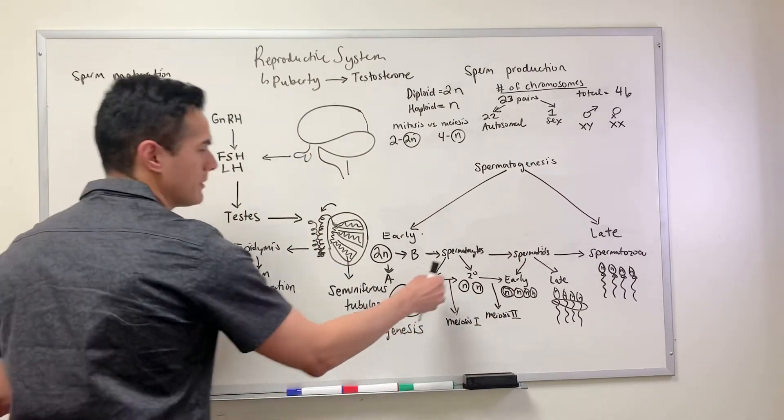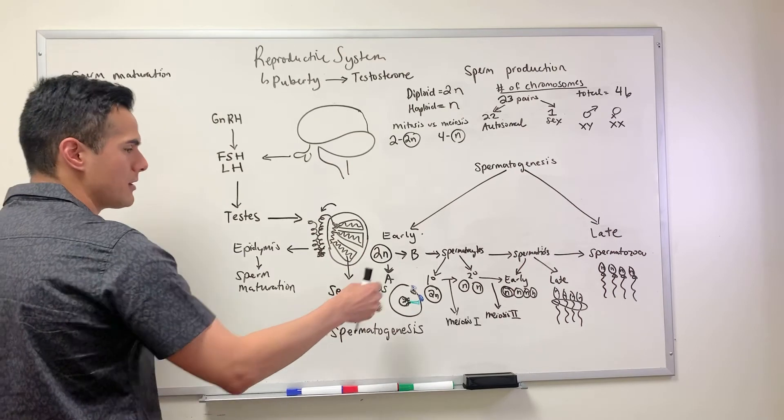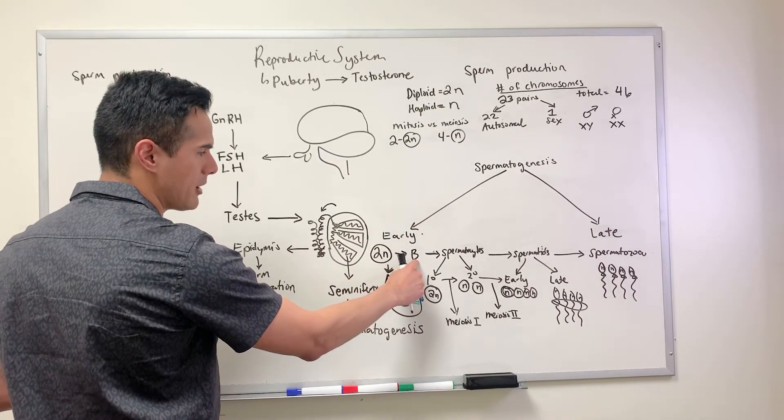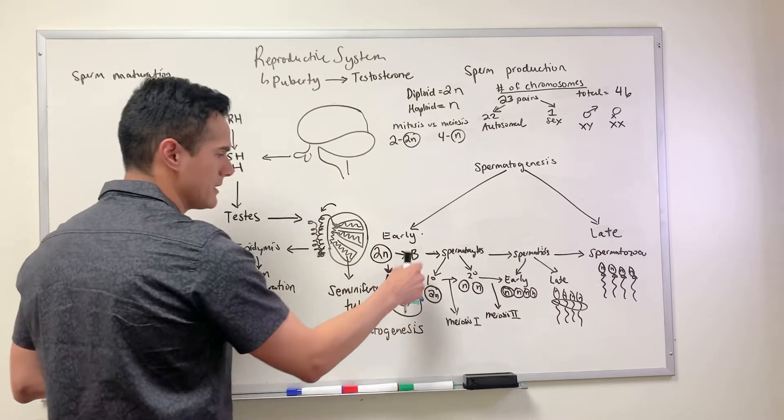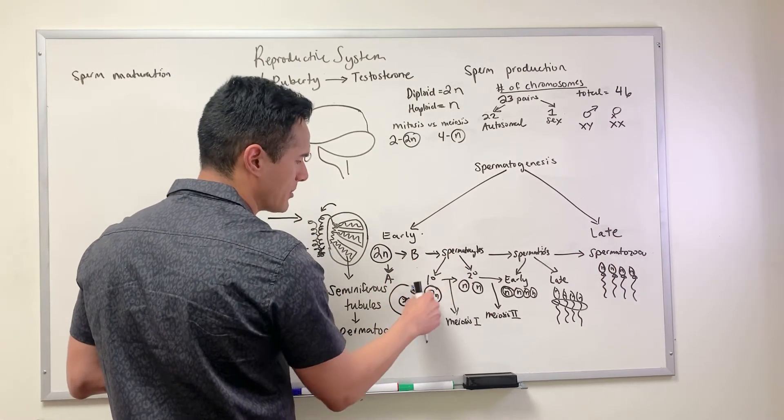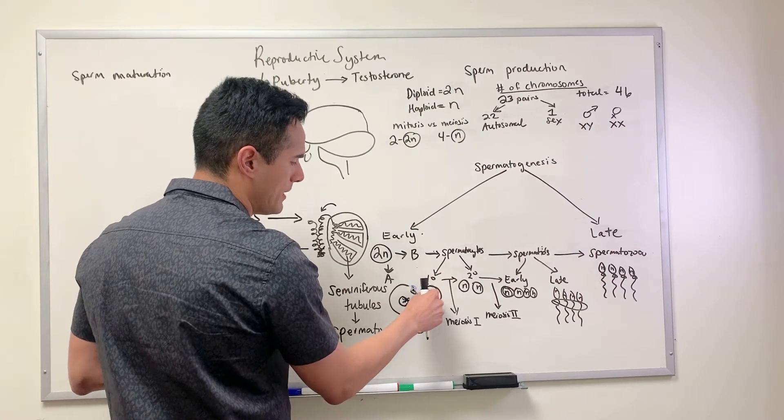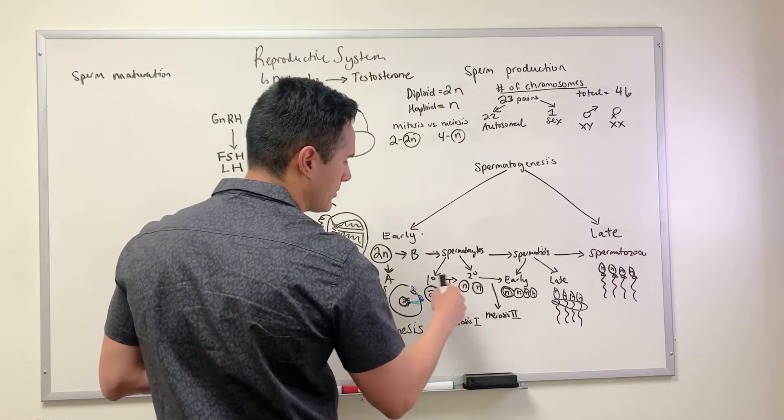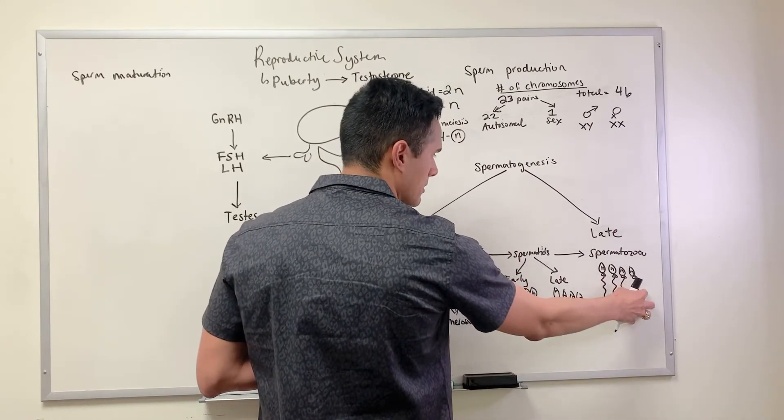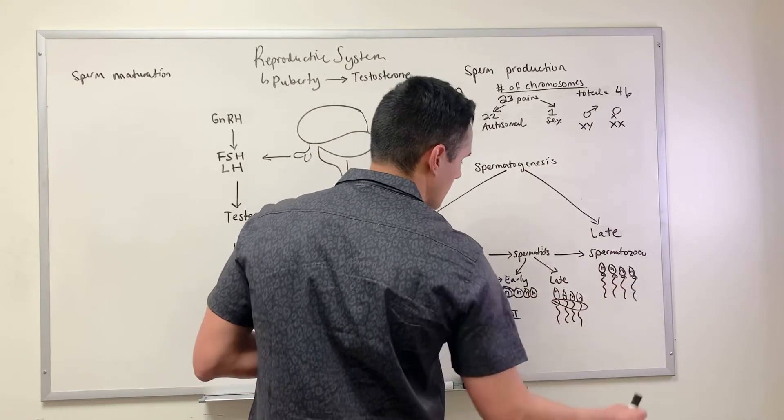Now we've completed our journey here, starting with our stem cell, getting into our type B daughter cell which is still diploid, and then it differentiates into the primary spermatocytes. From here we further develop until this process continues until we finally get to our spermatozoa.